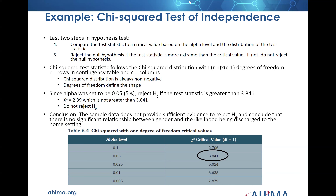The chi-squared distribution has (R-1) times (column-1) degrees of freedom. So if the alpha is set to 5% — that's the level of error we're willing to accept — we'll reject it if the test statistic is greater than 3.841. In this case, the sample data does not provide sufficient evidence to reject the null hypothesis, and we conclude there's no significant relationship between gender and the likelihood of being discharged to home.